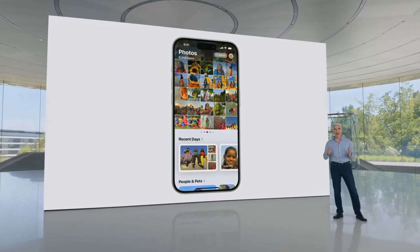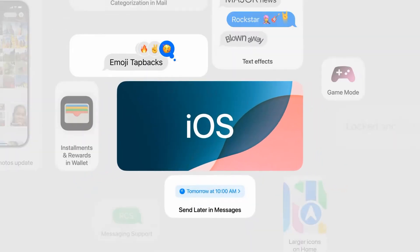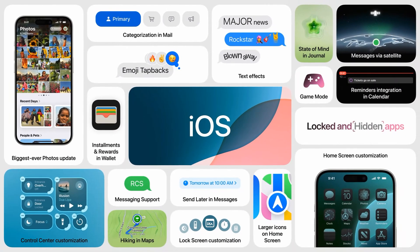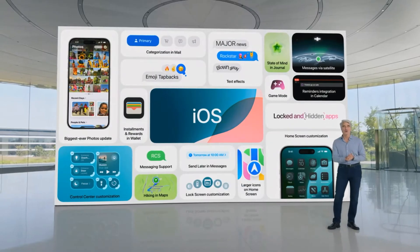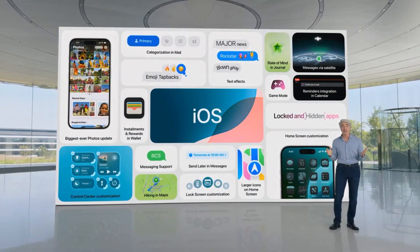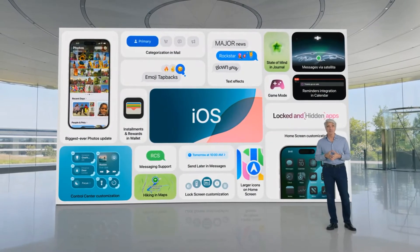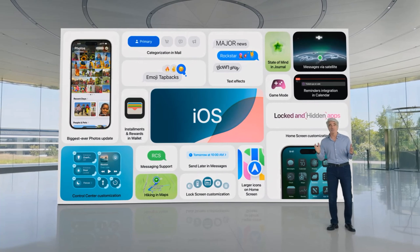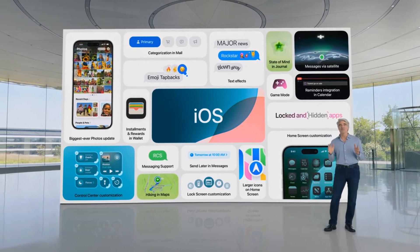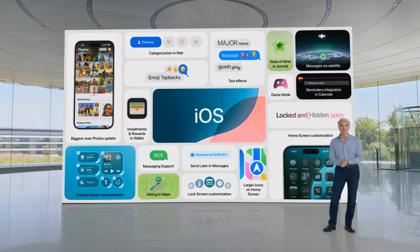So that's iOS 18, a big release that brings deeper customization to iPhone, new ways to stay connected in messages and mail, enhancements to privacy, and the biggest photos redesign ever. And so much more, including an option for larger icons on the home screen, RCS messaging support, and reminders integration in calendar.